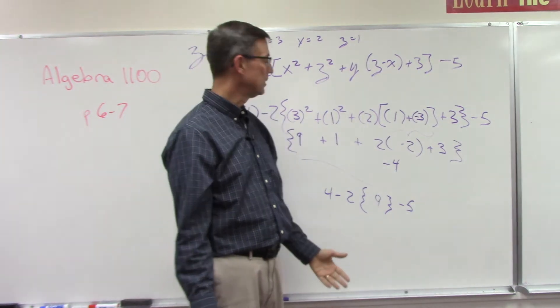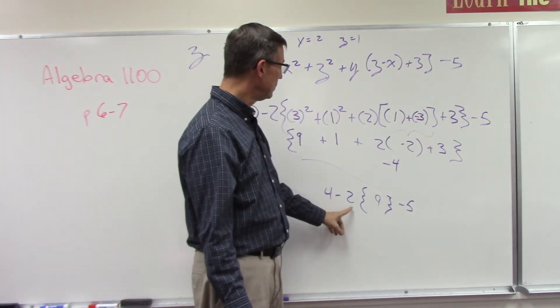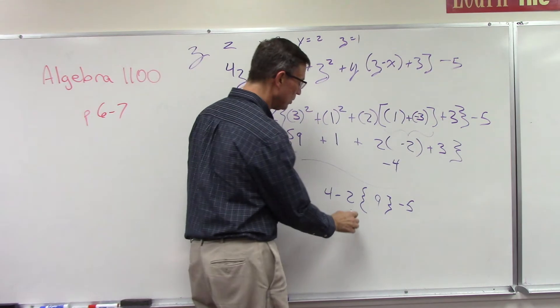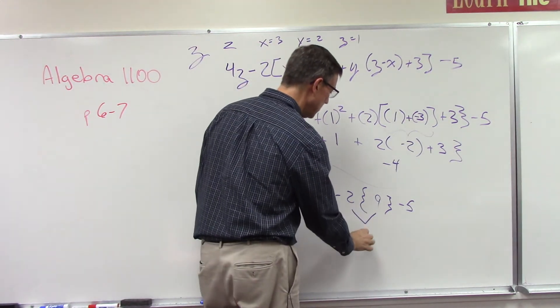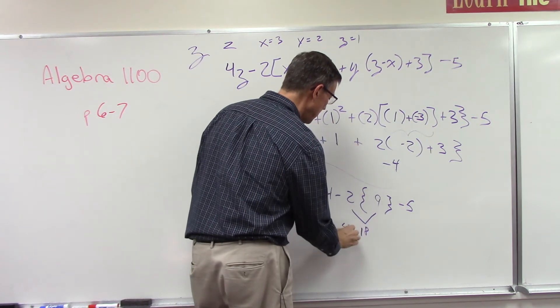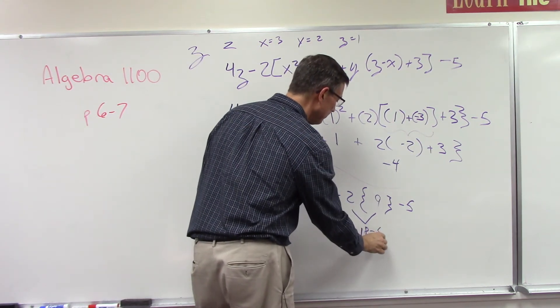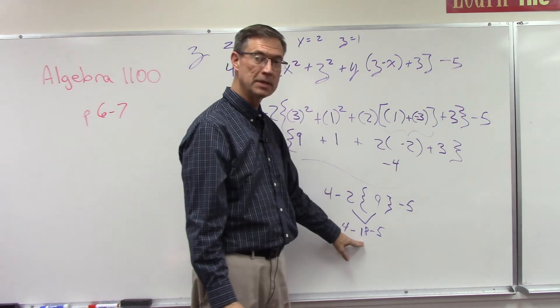So let's talk about how to do this and get it right. What we need to do instead is do this multiplication first. Okay, so the 2 times 9 is 18, and then we have the 4 out front. 4 minus 18, minus 5.